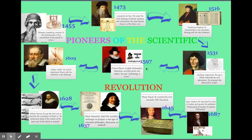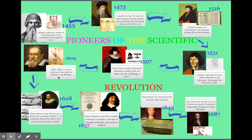Then you get Francis Bacon — 'knowledge is power' — who helped develop the process we call the scientific method today. That's one of the key components of the scientific revolution. Galileo then used Copernicus's model and backed it up with actual observation, proving it mathematically, taking these ideas even a step further.